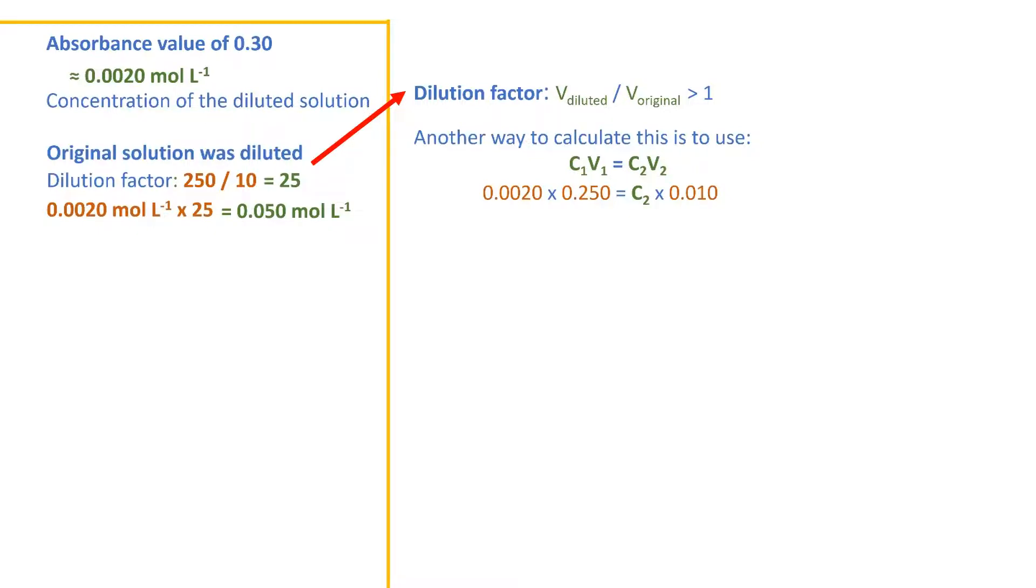or the concentration of the original solution. Rearranging and solving, we get the same result, 0.05 moles per liter.